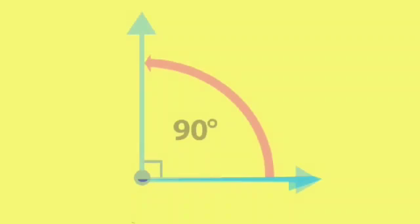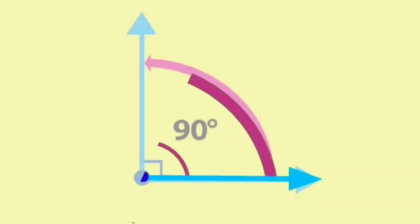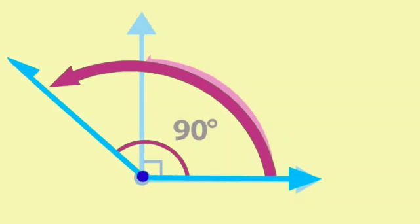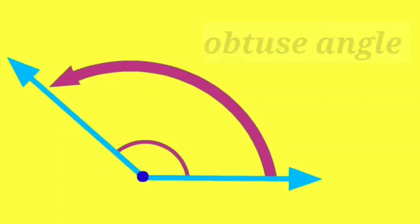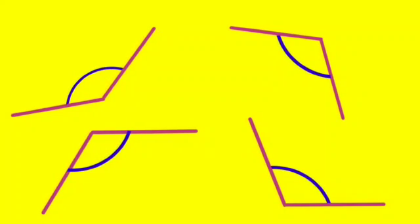The angle that is bigger than a right angle is called an obtuse angle. An obtuse angle measures more than 90 degree. It means all the angles that are bigger than 90 degree and smaller than 180 degree are known as obtuse angles.